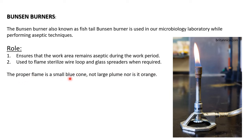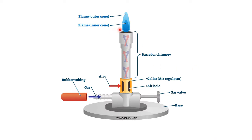The proper flame is actually the small blue cone — not a large plume and it should not be orange. A very large, completely orange flame is not the correct flame for the Bunsen burner. You should get a small blue cone. The actual flame you should see has an inner flame that is blue and the outer one can be blue to red to orange, depending on conditions. Now about the structure of the Bunsen burner.